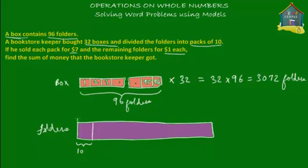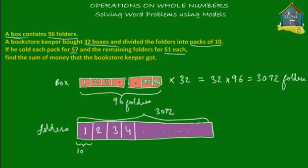He took all these 3072 folders and divided them into packs of 10. So he made pack number one containing 10 folders, pack number two containing 10 more folders, pack number three and pack four containing 10 folders each, and so on until his folders got exhausted — and maybe there was a remainder which was less than 10.